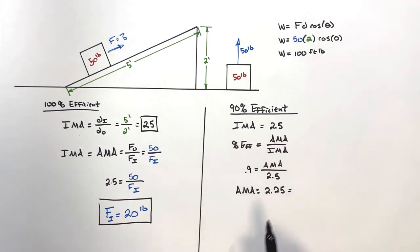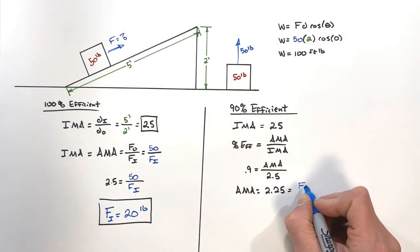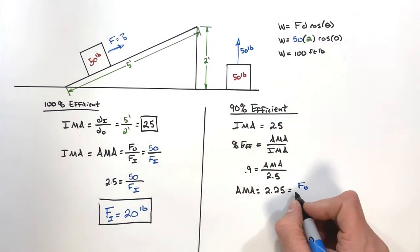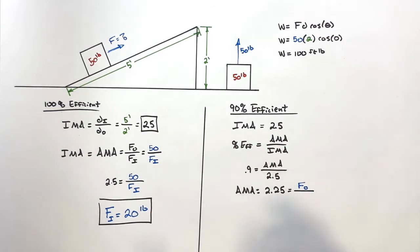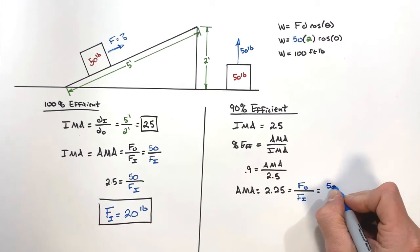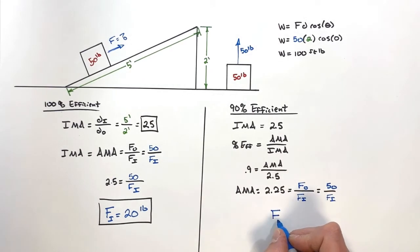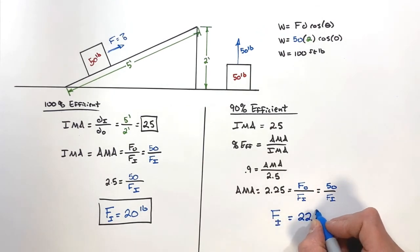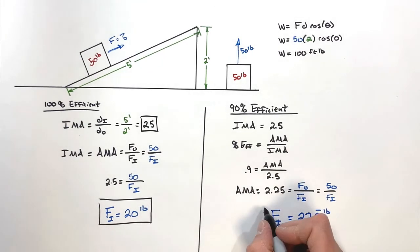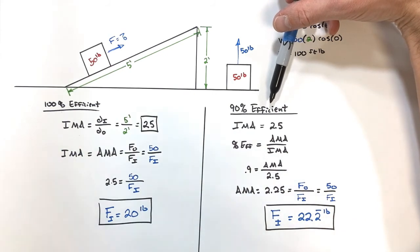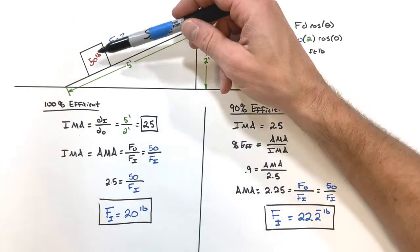Now solving for the input force: AMA equals force out over force in. Our output force is still 50 pounds — we're still effectively trying to lift a 50-pound box. So 2.25 equals 50 pounds over the input force, giving us a force in of approximately 22.2 pounds. In a less efficient system, we have to push harder on the box to get it up the hill.